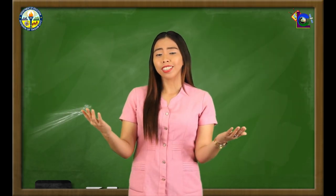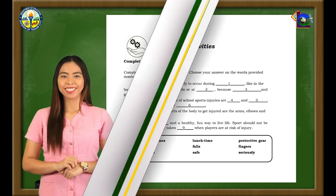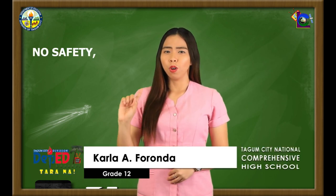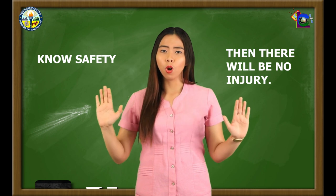Are all your answers correct? If not, try harder again next time. For additional activity, kindly open your module on page 18 and answer the section 'Complete Me' on a 1/4 sheet of paper. Another session has again ended. I hope you learned a lot from today's lesson on Sports-Related Injuries. See you all in the next episode of our School on Air television-based program. Once again, this is Teacher Carla A. Foronda saying: No safety, then there's injury. Knowing safety, then there will be no injury.